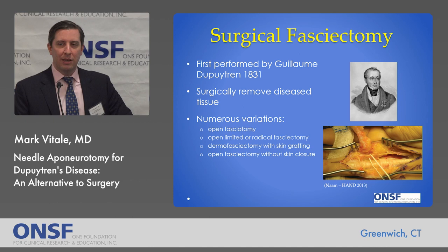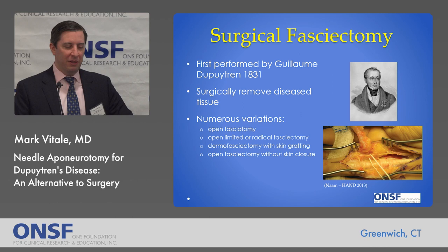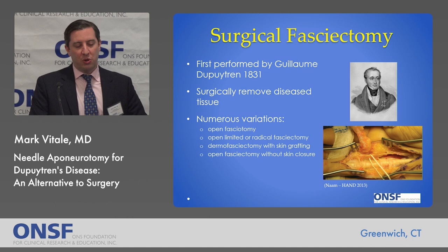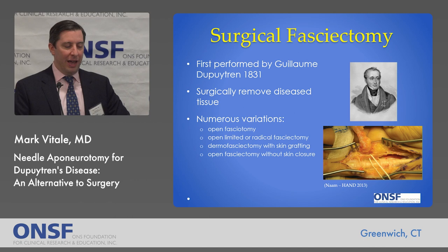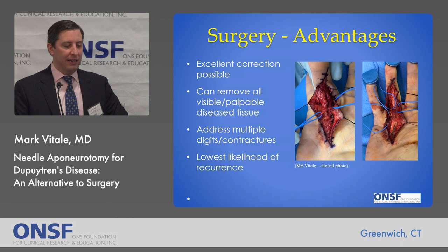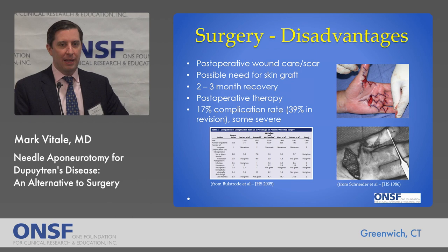Surgical fasciectomy has been performed since the 1800s — it was first performed by Dr. Guillaume Dupuytren, for whom this disease is named. It's a treatment in which surgery is done to remove the diseased tissue, with numerous variations ranging from a limited snip of the tissue to a radical fasciectomy with skin removal. The advantages of surgery are that excellent correction is possible — you can remove all the diseased tissue, address multiple digits at once, and of all the treatments it has the lowest risk of recurrence.